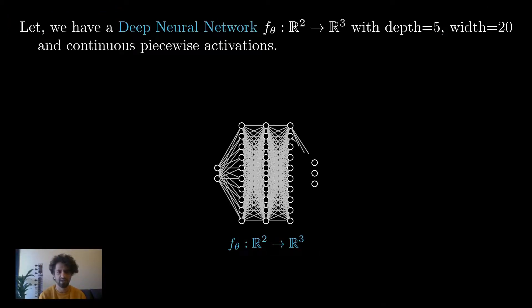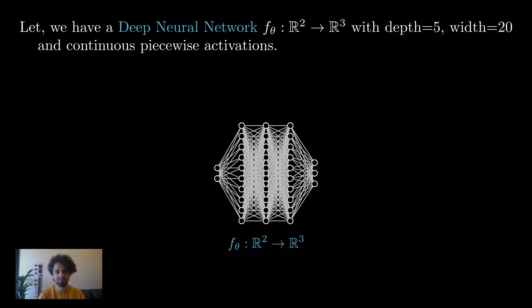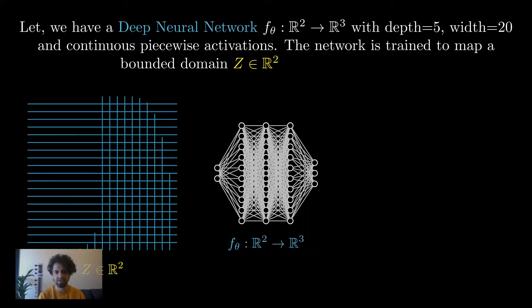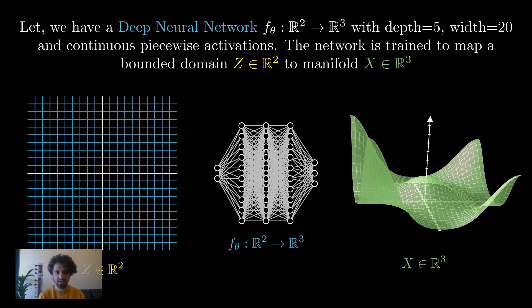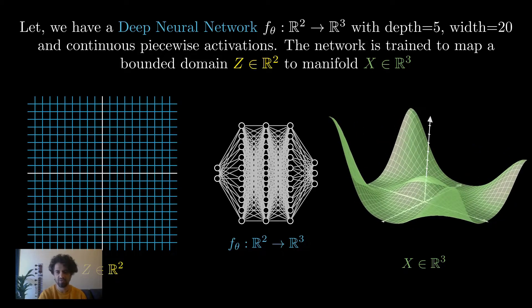Suppose we have a deep neural network f_theta with depth 5, width 20, and continuous piecewise defined nonlinearities such as ReLU or Leaky ReLU. The network is trained to map a bounded domain z in R² to a manifold or surface x in R³ that is given here to the right.